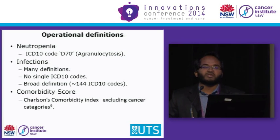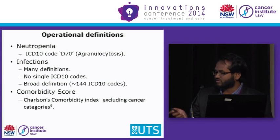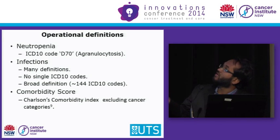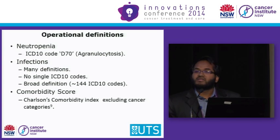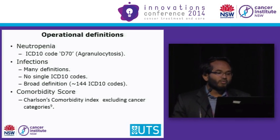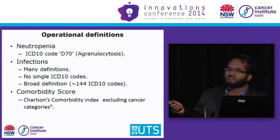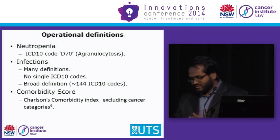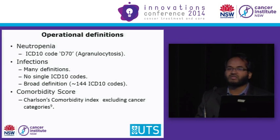Since we are using registry data, we don't have a clinical definition of febrile neutropenia. Rather, we used ICD-10 based definitions. We used the neutropenia definition as agranulocytosis, which is ICD-10 code D70. In terms of infections, there are many definitions available in the literature, and no single ICD-10 code is recorded in Australia to define infections. We identified 144 ICD-10 codes to define infections, and these codes were submitted to medical advisors — six clinicians who are experts in oncology, hematology, infectious disease, and epidemiology — and then we finalized our definitions. In terms of comorbidity score, we used the Charlson comorbidity score, excluding cancer categories.